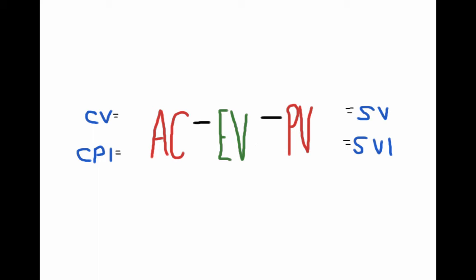To calculate cost performance and schedule performance indicators, we have to do a division operation. So we place division symbols across the bottom.